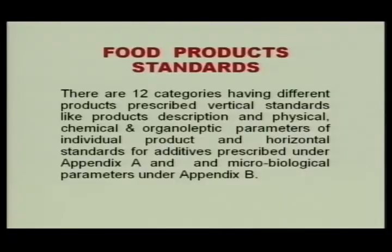First let us discuss food product standards. There are 12 categories of food products having different products with prescribed vertical standards like product description, and physical, chemical and organoleptic parameters of individual products, and horizontal standards for additives prescribed under Appendix A and microbial parameters prescribed under Appendix B.